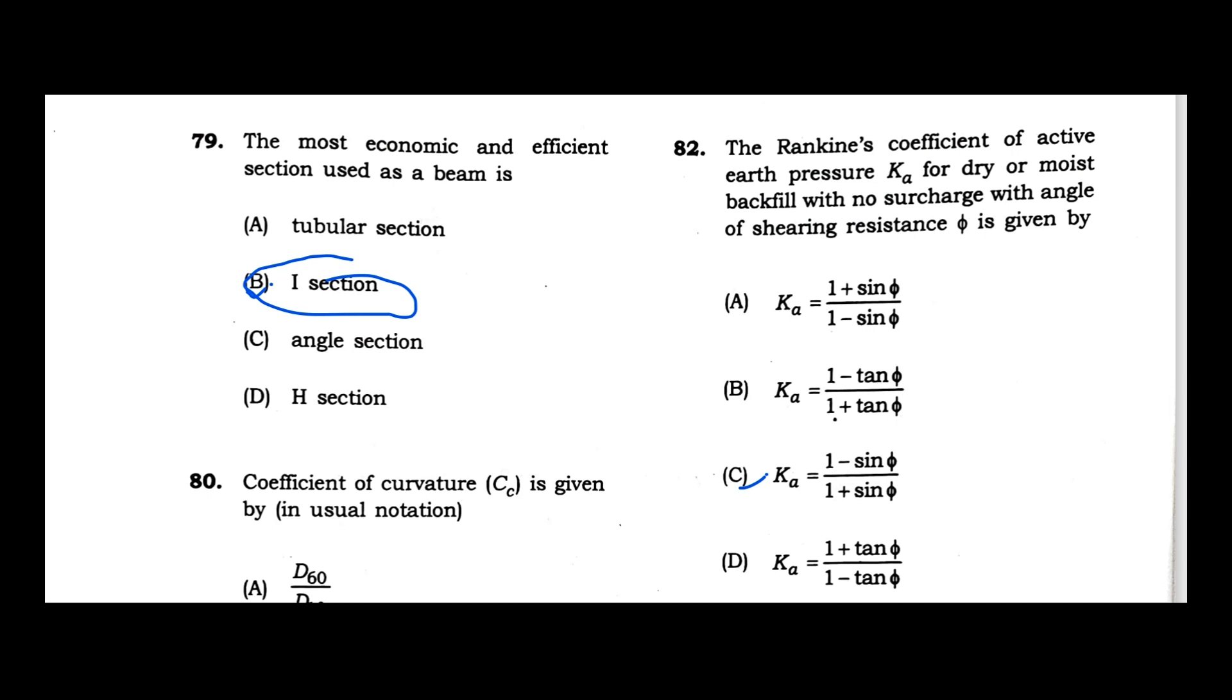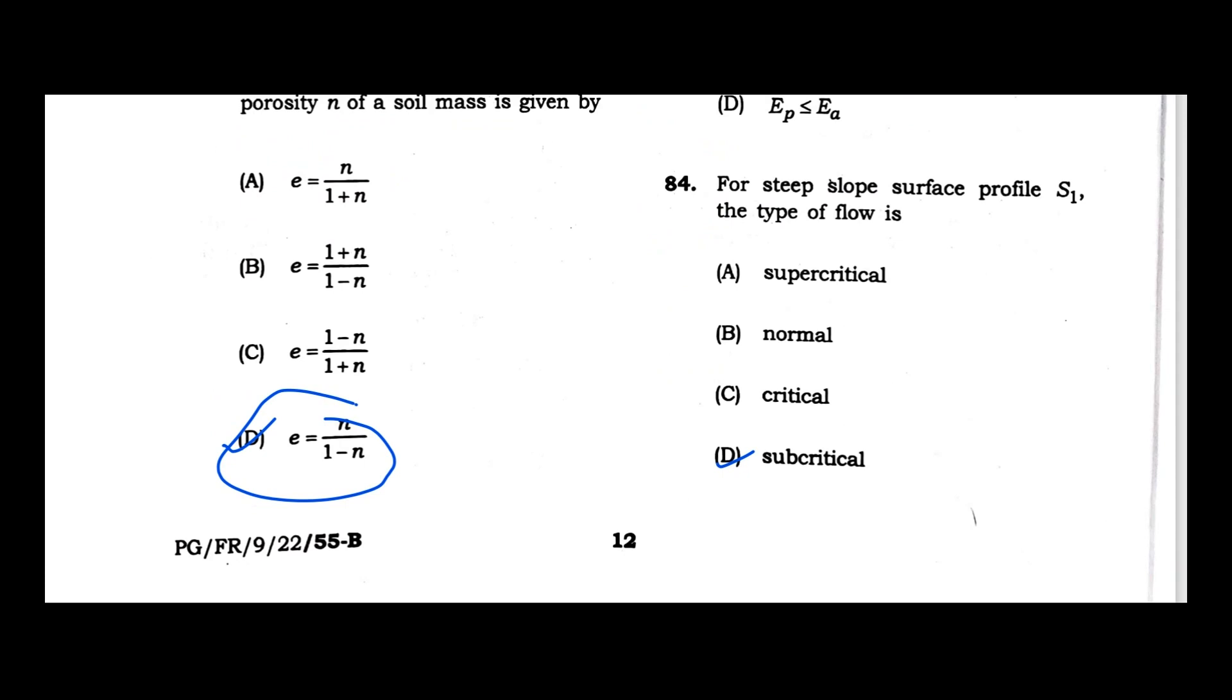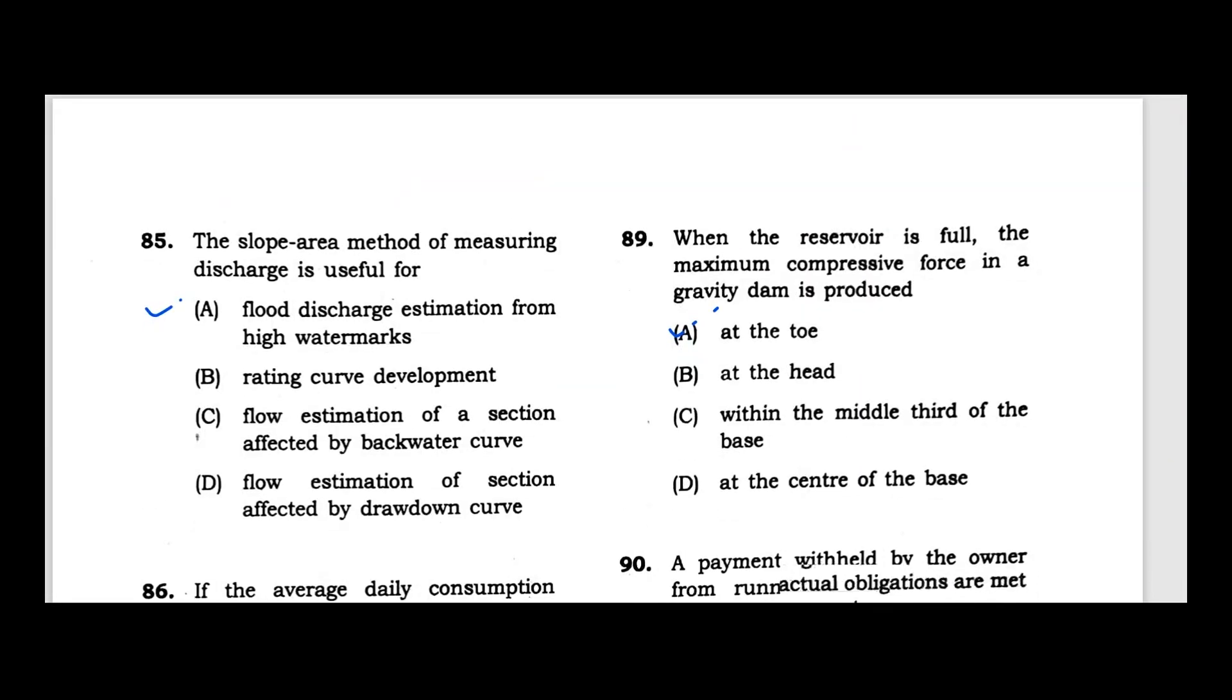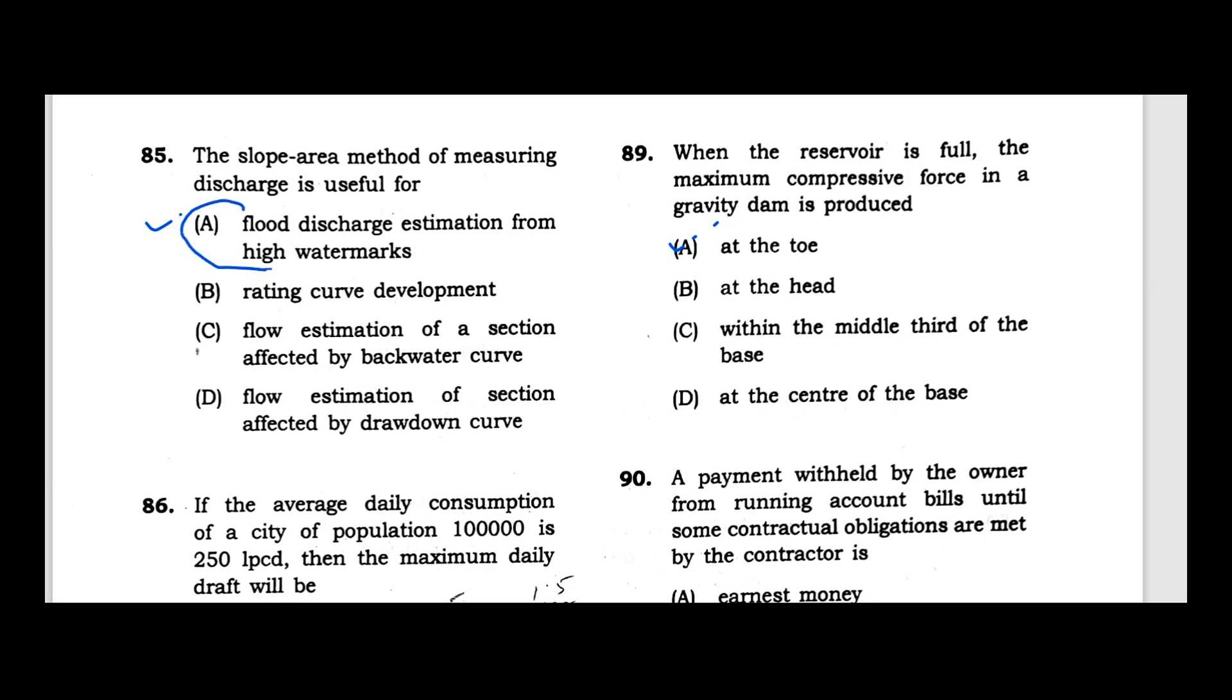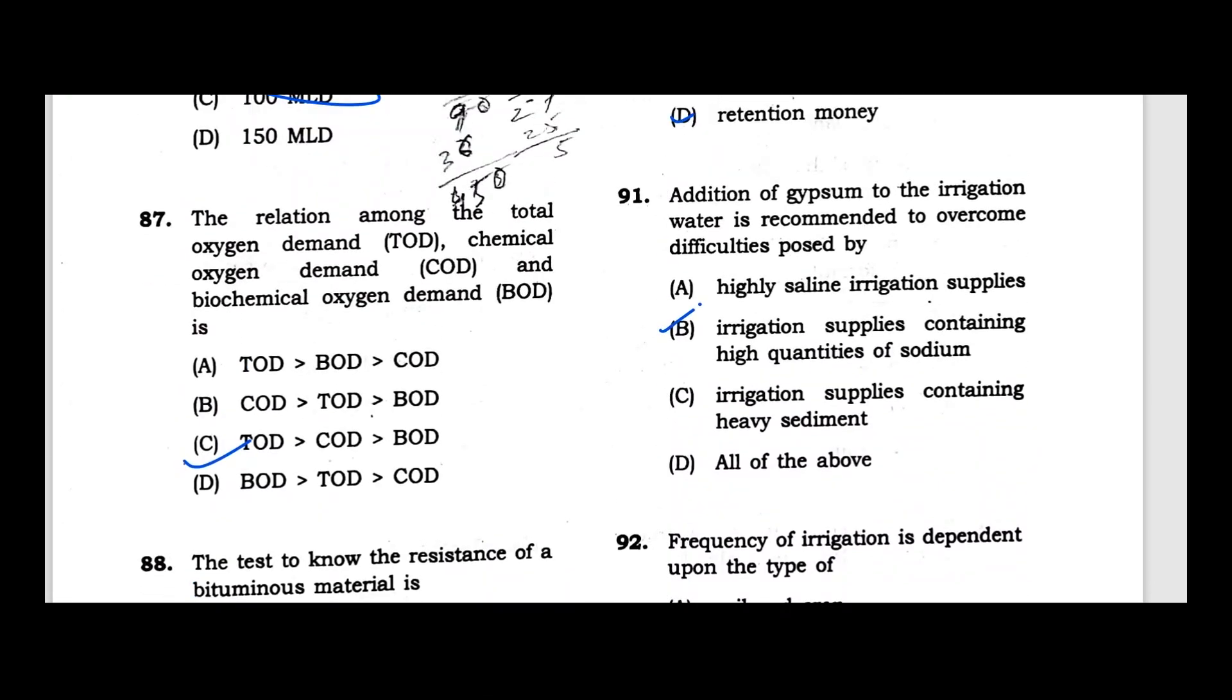Question 83: If pan evaporation is denoted by EP and actual evaporation is EA, then the relationship is that pan evaporation is always greater than actual evaporation. Option B is correct. Question 84: For a steep slope surface profile S1, the type of flow is subcritical. Question 85: The slope area method of measuring discharge is useful for flood discharge estimation from high water marks. Question 86-87: For water supply, maximum daily draft is needed. If the average daily consumption of a city of population 10 lakhs is 250 lpcd, the maximum daily draft is 45 MLD.